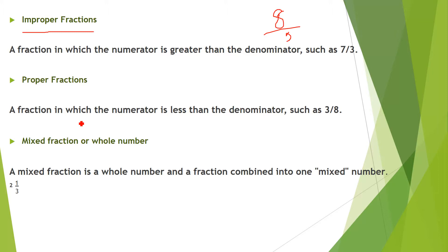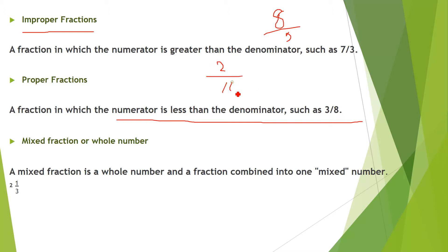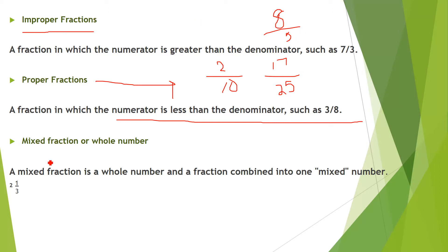Then there are proper fractions — the inverse of improper. A proper fraction is one where the numerator is less than the denominator, such as 3/8, 2/10, or 17/25. The numerator must be less than the denominator.